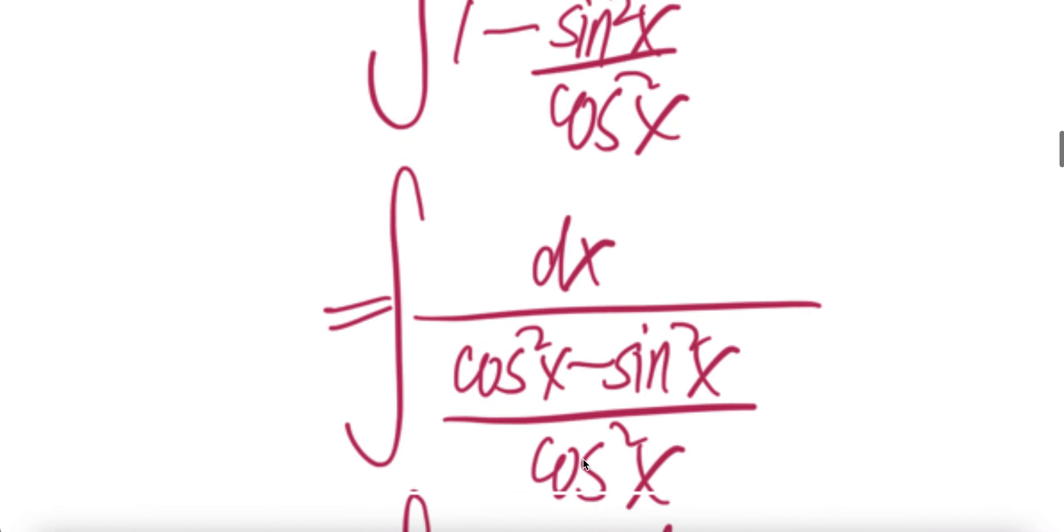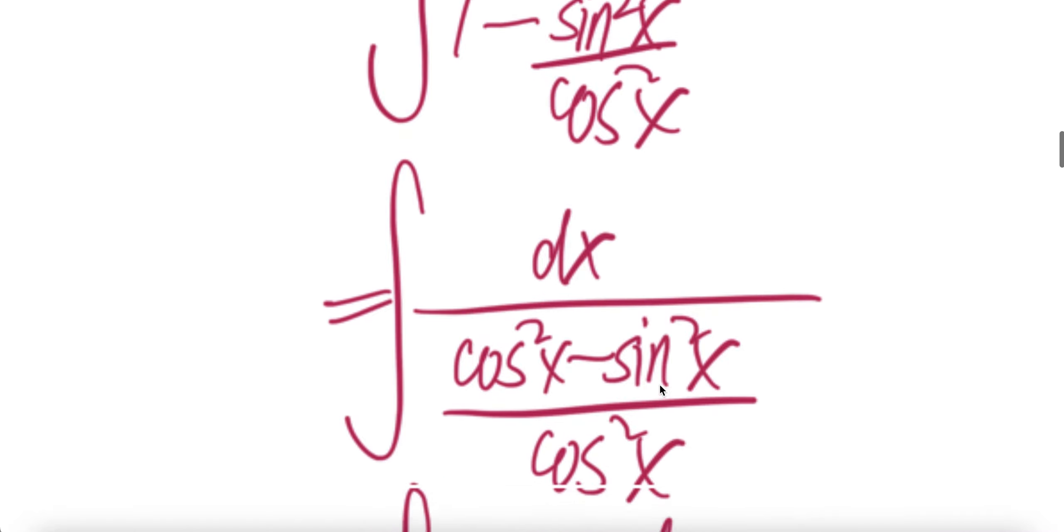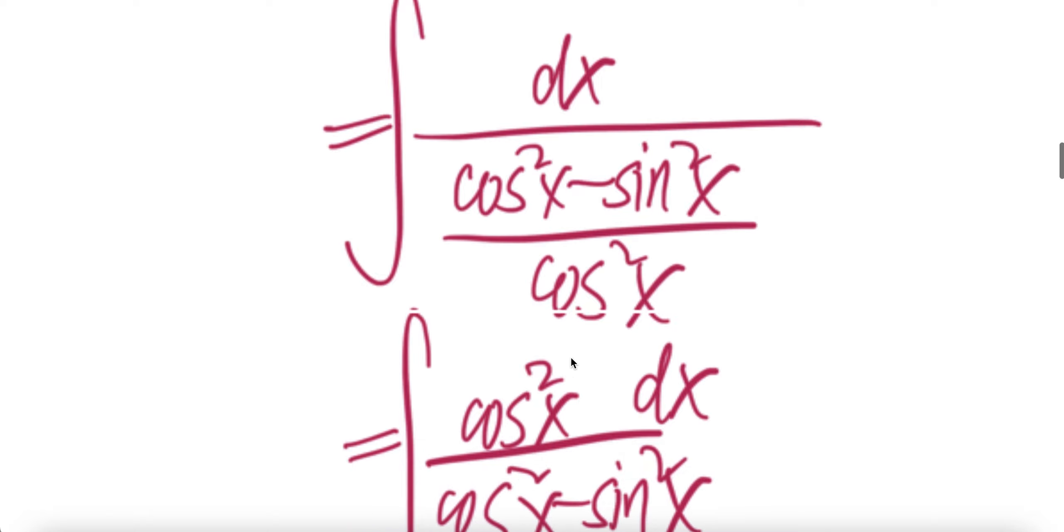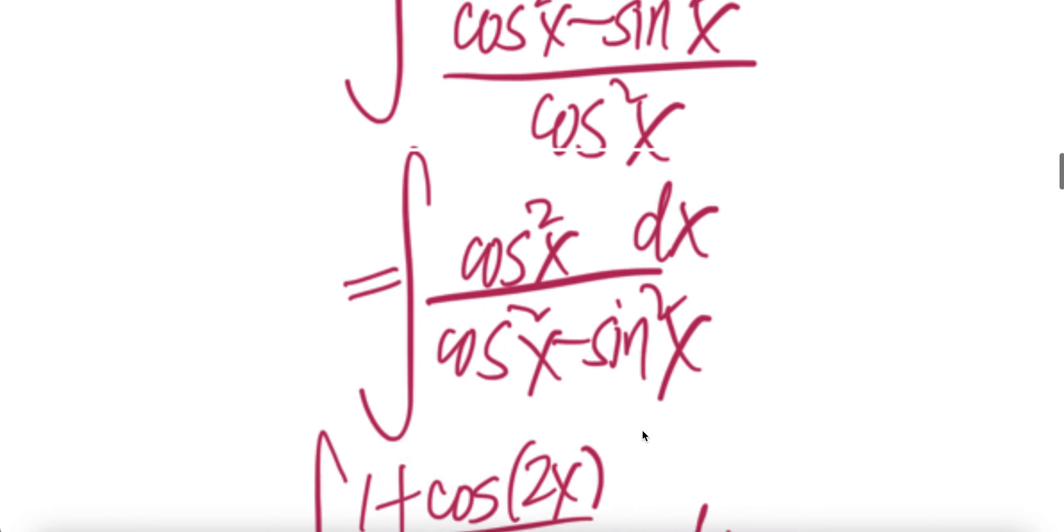The common denominator will be cos squared x here, then 1 here you get cos squared x minus sine squared x. Flip it upstairs, you get cos squared x. Downstairs is cos squared x minus sine squared x.